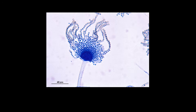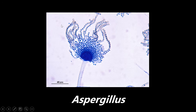This next example is Aspergillus. This structure here is called a conidiophore. If you see this flower-like appearance, you want to associate that with Aspergillus. Don't get this confused with the spaghetti and meatballs appearance of Malassezia furfur — it is different. Be sure to take a look at that picture and be able to differentiate them.